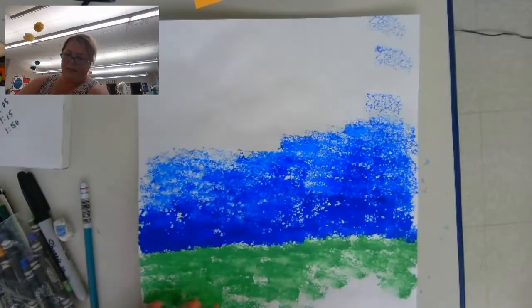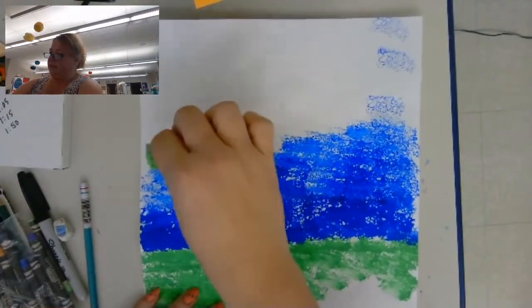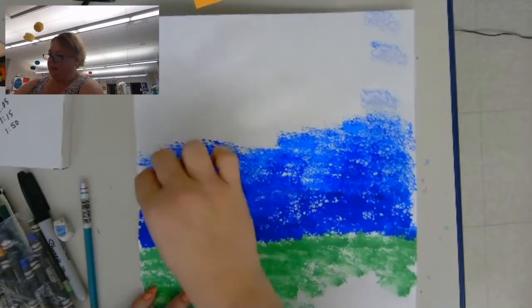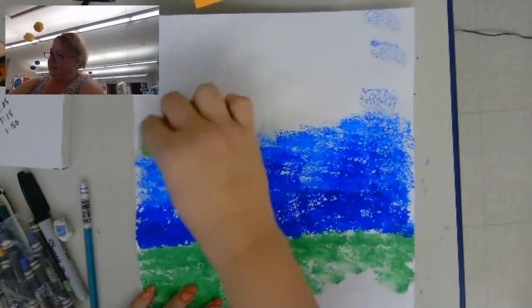Now if you don't have paints, well let me start with this. If you have paints and you don't have a sponge, you can just paint it with a paintbrush.